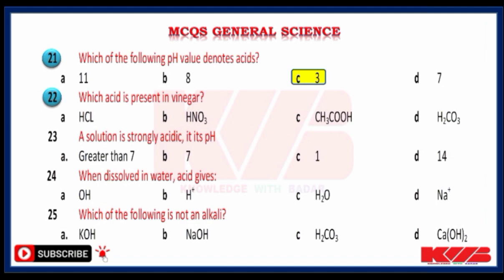Which acid is present in vinegar? HCl, HNO3, CH3COOH or H2CO3? Yes, CH3COOH. A solution is strongly acidic — its pH is greater than 7, equal to 7, equal to 1 or equal to 14? Yes, 1. When dissolved in water, an acid gives hydroxide, hydrogen, water or sodium? Yes, hydrogen.